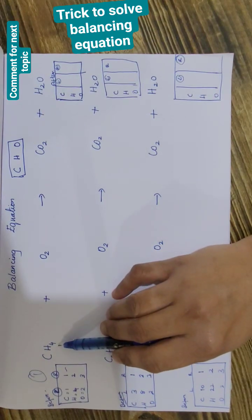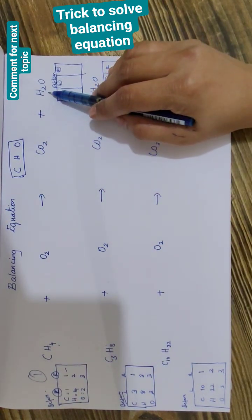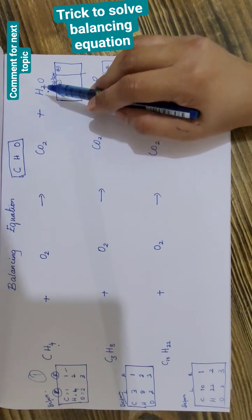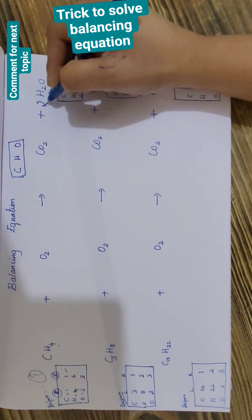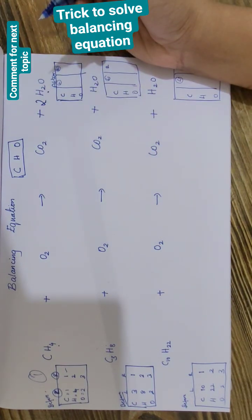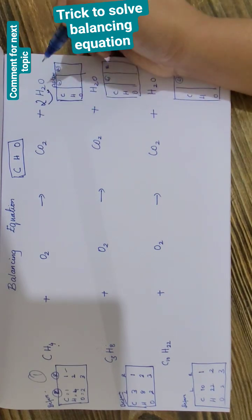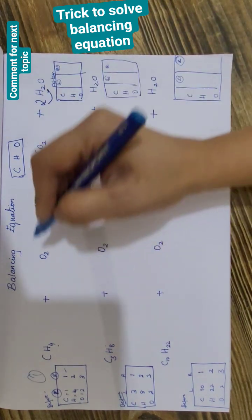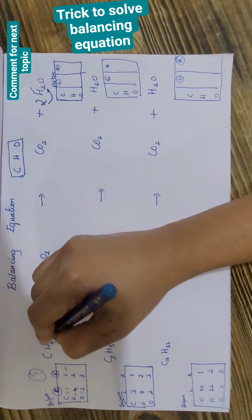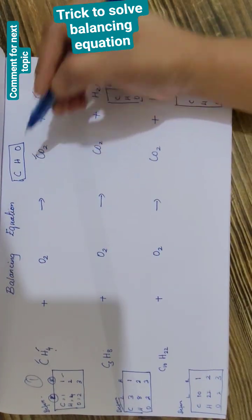We have four hydrogens on the left side and two hydrogens on the right side, so we need to balance this. I simply add two in front of hydrogen, which means now we have two times two — four hydrogens. So our hydrogen is also balanced now.